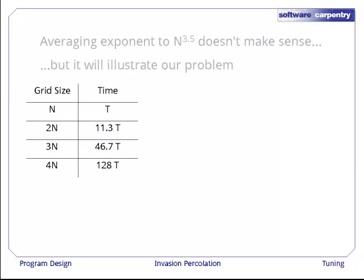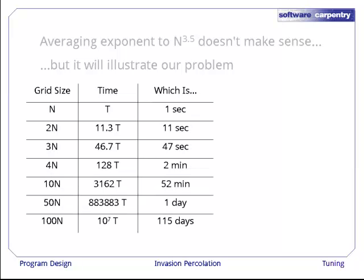Here are some grid sizes and the time it would take to fill a grid of that size if, on average, filling takes n to the 3.5 steps. To make these numbers a little bit more realistic, let's add another column and a few more rows. If filling a grid of size n takes one second, then filling a grid that's 100 times as large on each axis will take 115 days. That's a pretty steep cost because we may need to run our simulation hundreds or even thousands of times to generate good statistics about the fractals it creates.